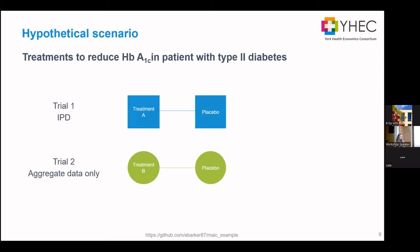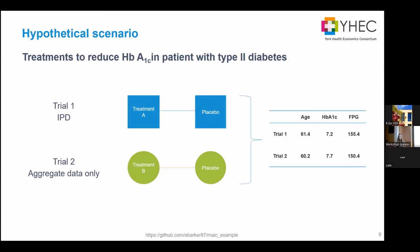I've created a hypothetical scenario with simulated data. We have Trial 1 with IPD comparing Treatment A with placebo, and Trial 2 with aggregate data comparing Treatment B with placebo, both looking to reduce HbA1c in patients with diabetes. We could do a simple indirect comparison, except we think there are differences in baseline characteristics — specifically age, baseline HbA1c, and FPG — and baseline HbA1c is known to have a better impact post-dosing if it's higher.